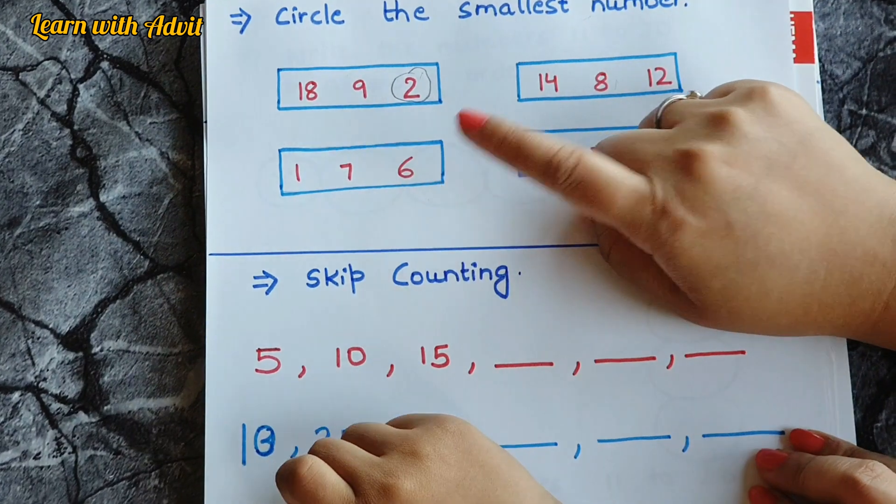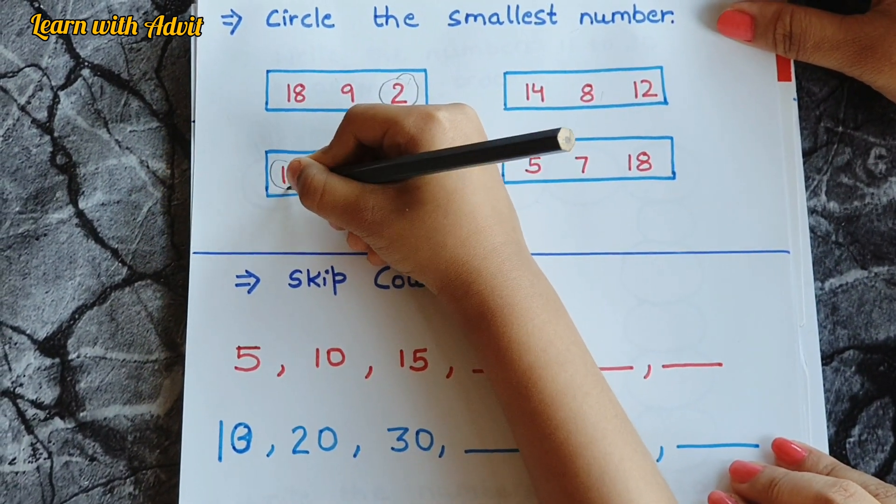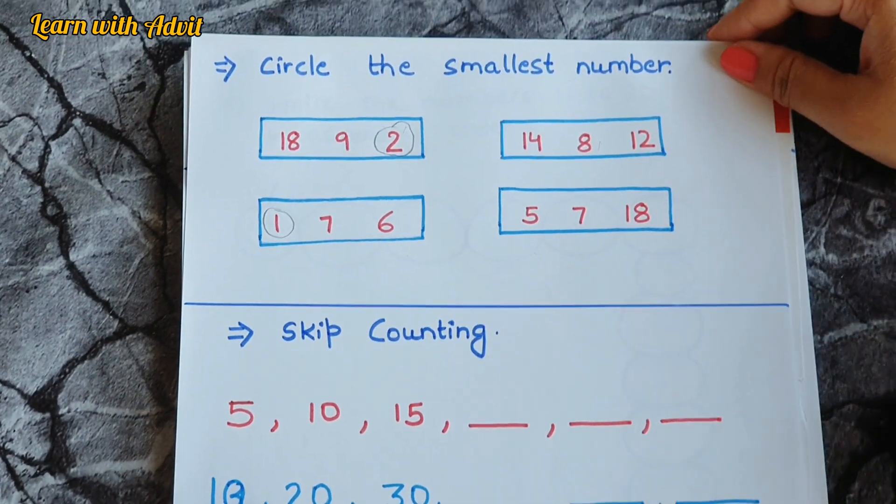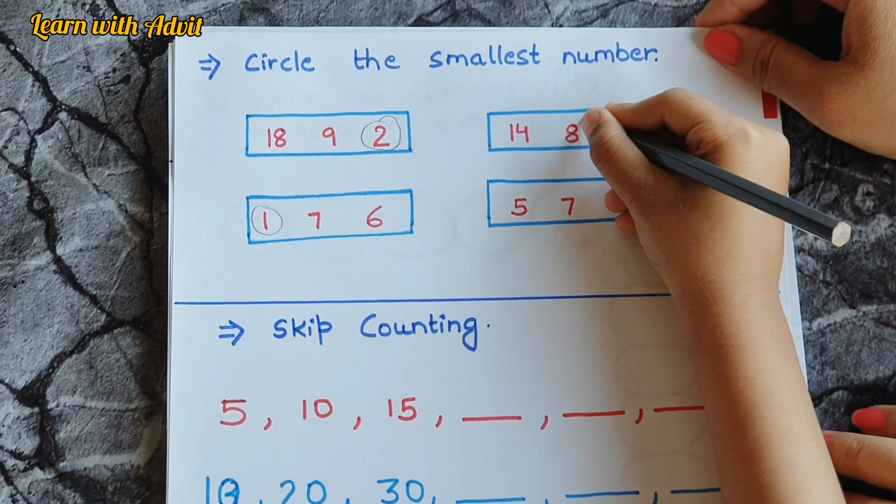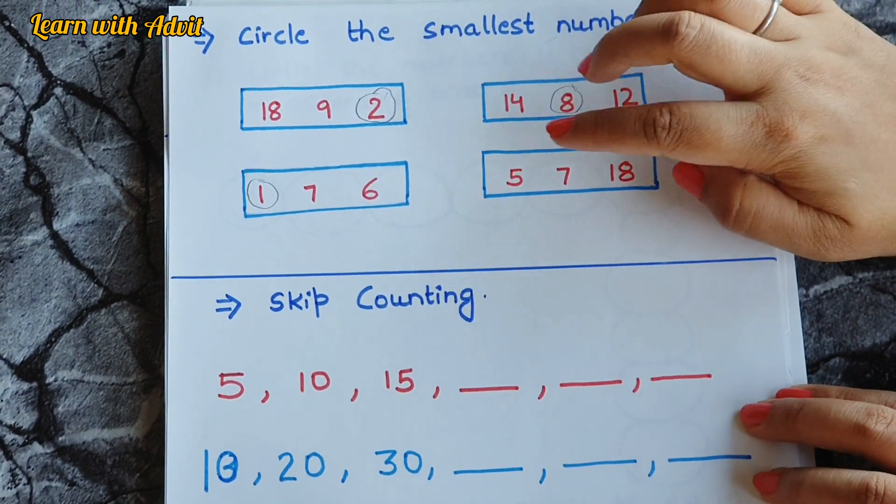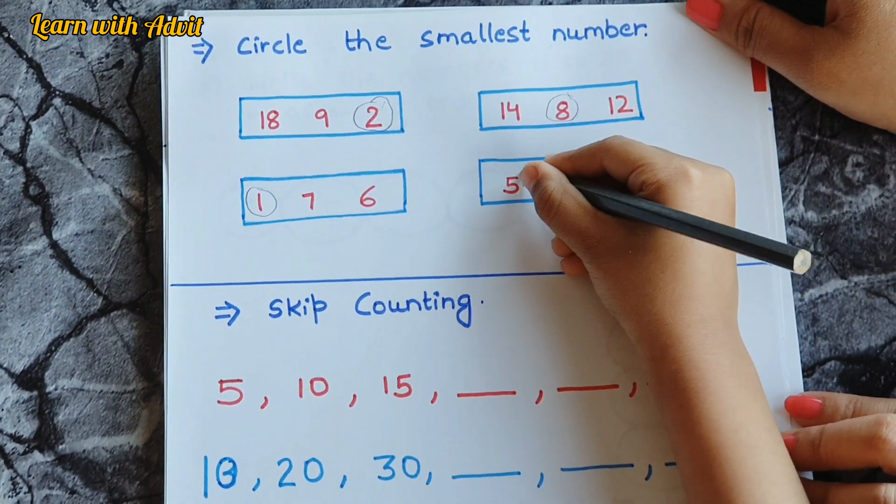In this, one, seven, or six? Which one is the smallest? One. Very good. In this, fourteen, eight, or twelve? Eight. And the last rectangle, five, seven, or eighteen? Which one is the smallest? Five. Very good.